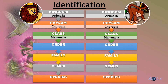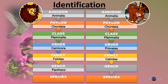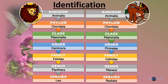The lion is from the order Carnivora, while the monkey is from the order Primates. The family for the lion is Felidae; the family for the monkey is Cercopithecidae. The genus for the lion is Panthera; the genus for the monkey is Macaca. And finally, the species for the lion is leo, and the species for this monkey is radiata. This is how identification is carried out in taxonomy.